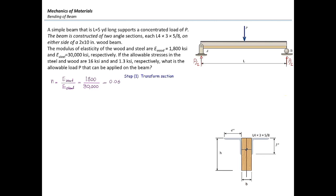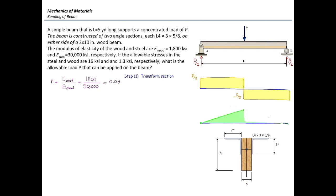Now let's determine the shear and moment diagrams. The reaction force on each side is P/2. The shear goes up by P/2 on the left, remains constant to the midpoint, then jumps down by P, and remains constant to the right end. The moment starts at zero on the left, increases linearly to the midpoint, then decreases linearly to zero. The maximum moment equals the area under the shear on half the beam: (P/2) × (L/2) = PL/4.